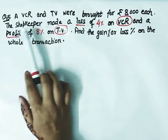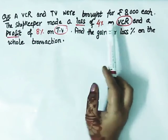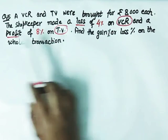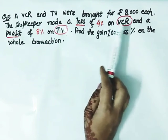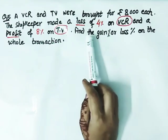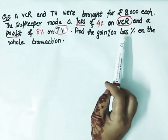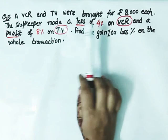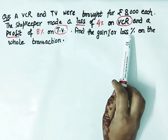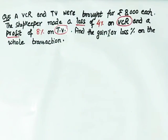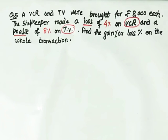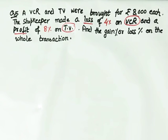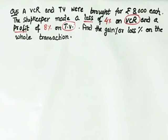8,000 rupees each means VCR's cost price is 8,000 and TV's cost price is also 8,000. The shopkeeper made a loss of 4% on VCR, while he made a profit of 8% on TV. Find the gain percent or loss percent. We don't yet know if it's gain or loss. When we do the final calculation, we will come to know. We have to find gain or loss percent on the whole transaction, meaning total for both VCR and TV together. So we will find this out separately for VCR and TV.